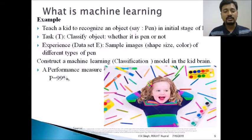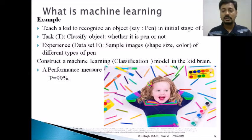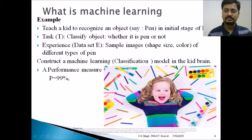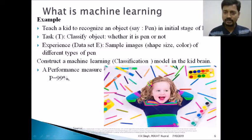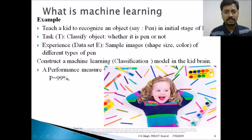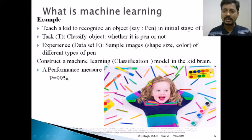We also define the performance measure — we want the classification accuracy to be 99%. The kid learns by being shown many samples, many different objects. Every time, the kid takes the experience, takes the data, feeds it into the model, and updates the model. Once we show a sufficient number of samples — maybe thousands of objects — the model is constructed in the mind. Afterward, whenever you show a new object and ask 'is it a pen?', the kid may answer yes or no.